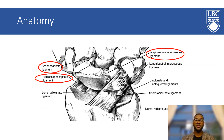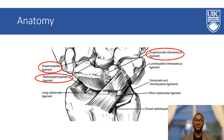The major ligaments attached to the scaphoid are the scaphocapitate ligament, the radioscaphocapitate ligament, and the scapholunate interosseous ligament. The scaphocapitate ligament binds the scaphoid and capitate. The radioscaphocapitate ligament connects the palmar surface of the distal radius with the scaphoid and the capitate bone. The scapholunate interosseous ligament is the strongest scaphoid ligament, acts as the primary stabilizer, connecting the scaphoid and lunate carpal bones. These ligaments are important in scaphoid fractures as a tear leads to a displaced fracture or carpal instability which requires surgical intervention.